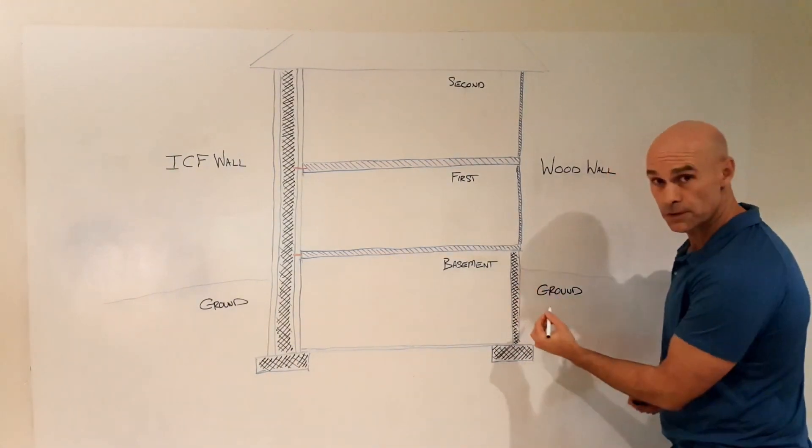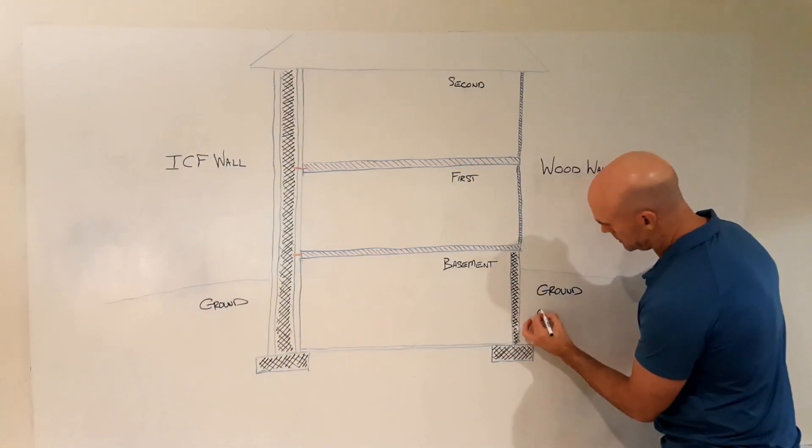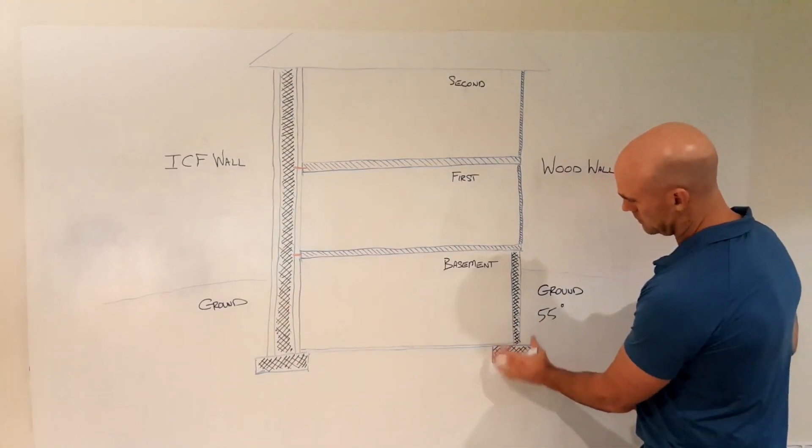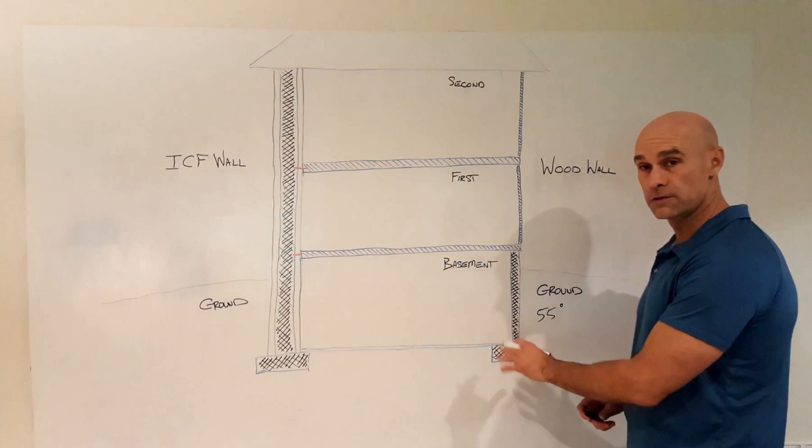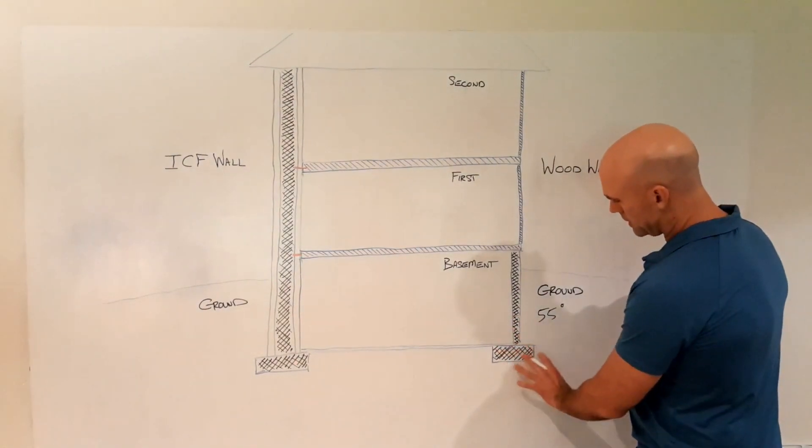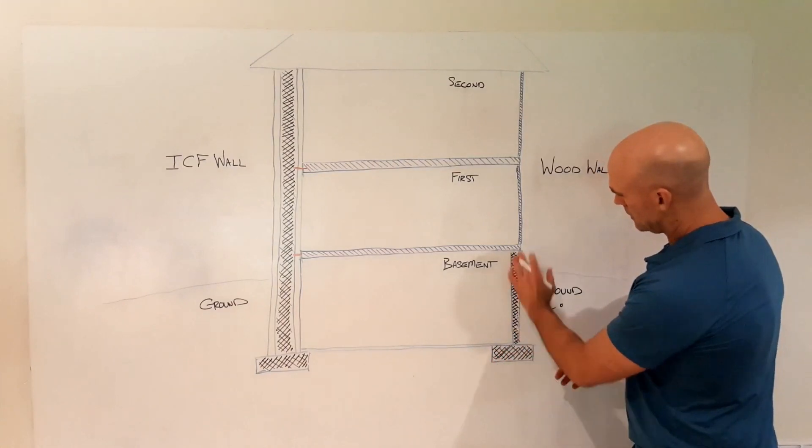At about three feet below ground, the earth temperature is a steady 55 degrees Fahrenheit. That means the footer and foundation wall will be 55 degrees. That's sometimes why basements can feel a little cooler. That energy is directly radiated into the footer and foundation wall.